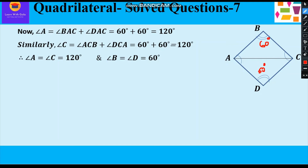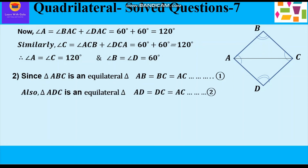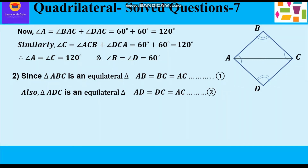Now further, since triangle ABC is an equilateral triangle, its sides are also equal. So AB = BC = AC. This is equation 1. Also in triangle ADC, because it is an equilateral triangle, all sides are equal. So AD = DC = AC. This is equation 2. From equations 1 and 2 we can conclude that AB = BC = CD = DA.